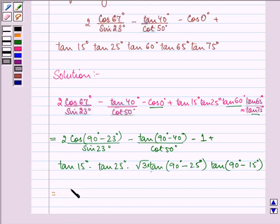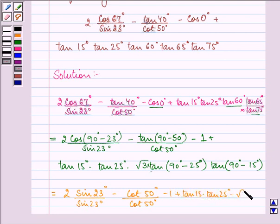So in doing so we have 2 cos(90° - θ) is sin θ, so sin 23° upon sin 23° minus tan(90° - θ) is cot θ, so it will be cot 50° upon cot 50° minus 1